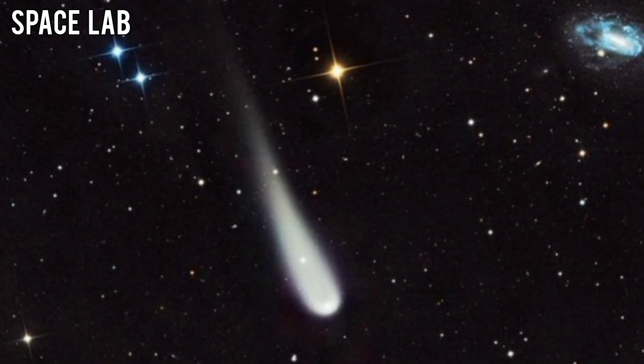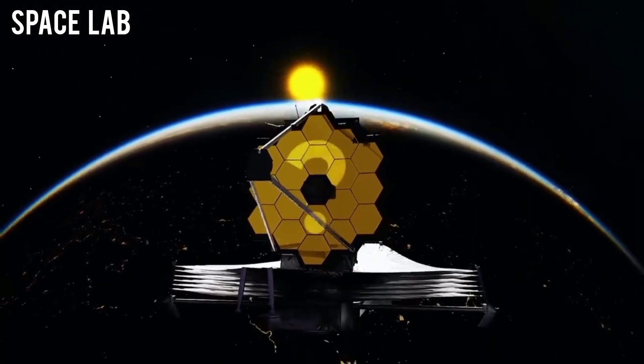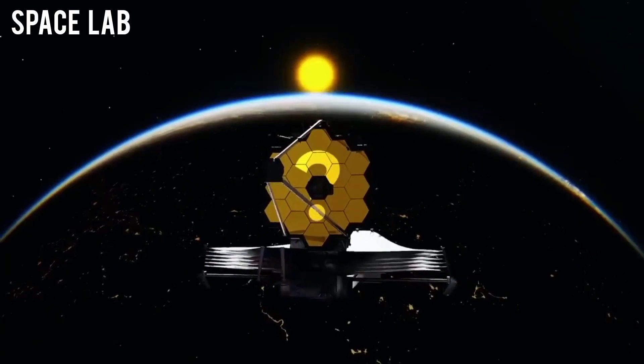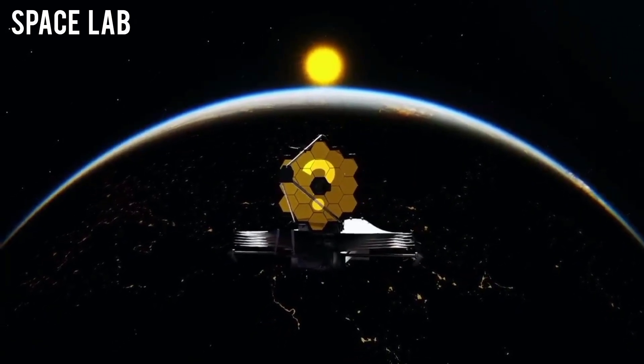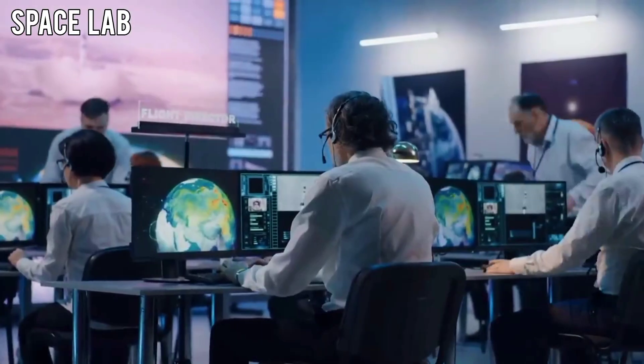After years of silence, the James Webb Space Telescope turned its golden mirrors toward a faint returning object, an icy traveler that shouldn't have been back for another 700 years. And what Webb saw next shocked everyone at NASA.